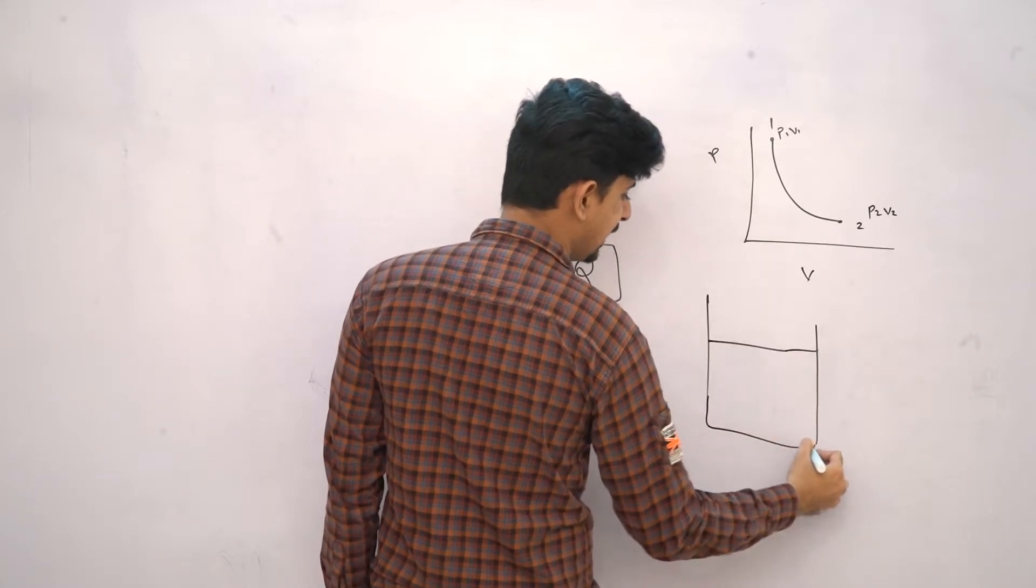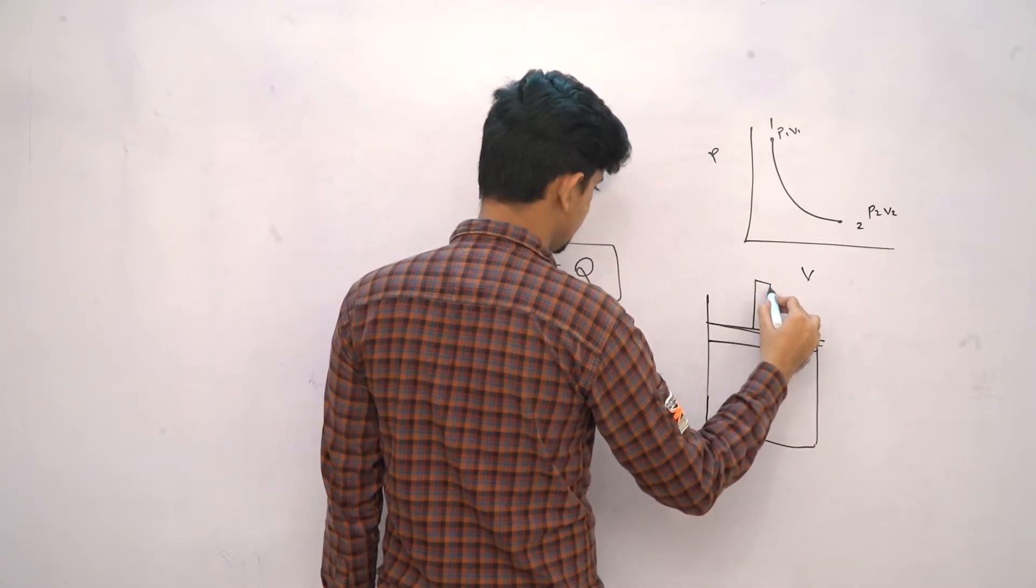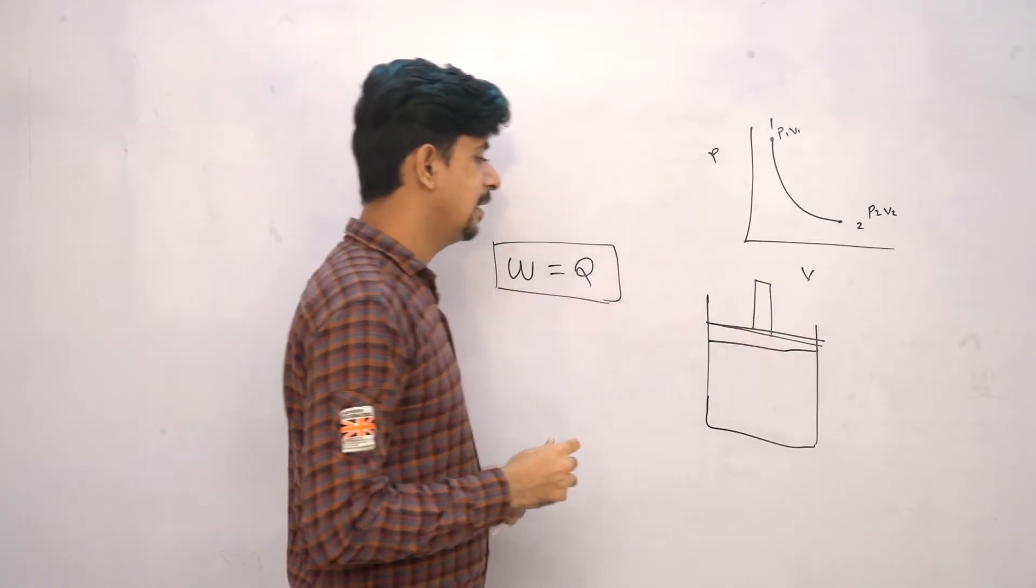That is we will be having a cylinder, and in this cylinder will be enclosing ideal gas. We will be having a piston which is massless frictionless. Now for this case.